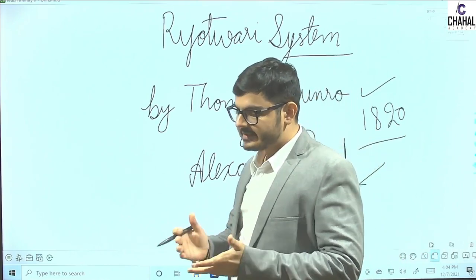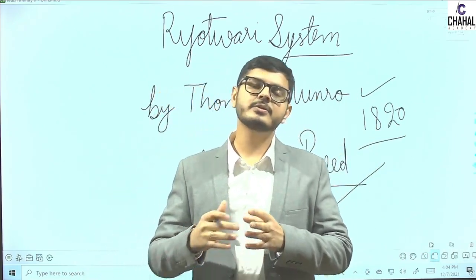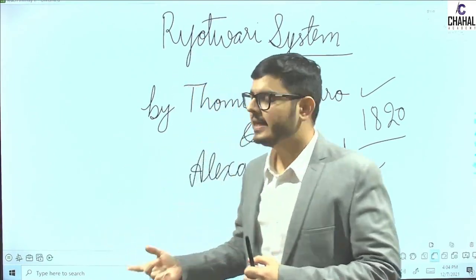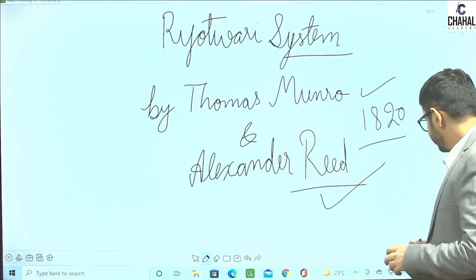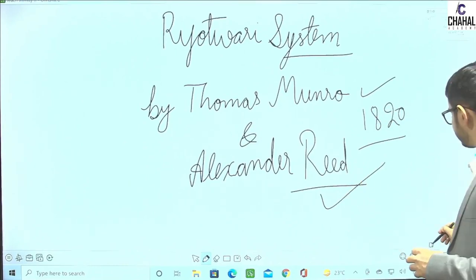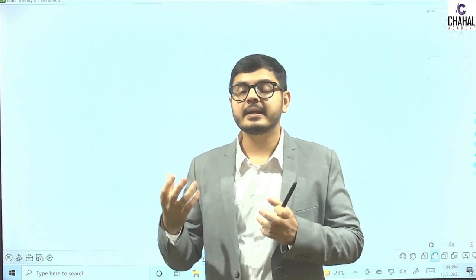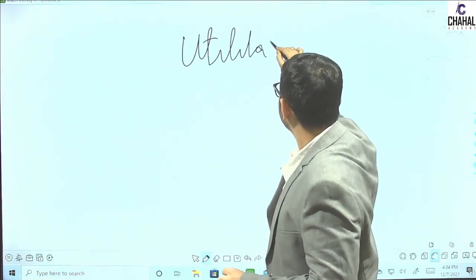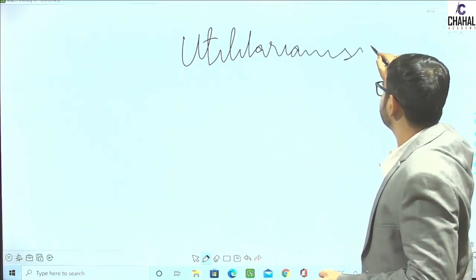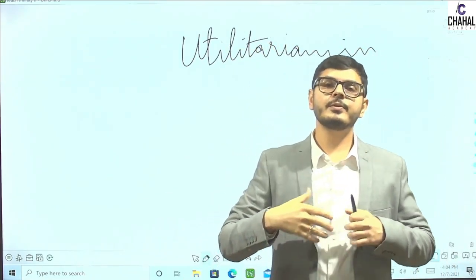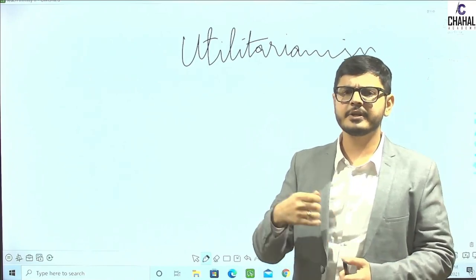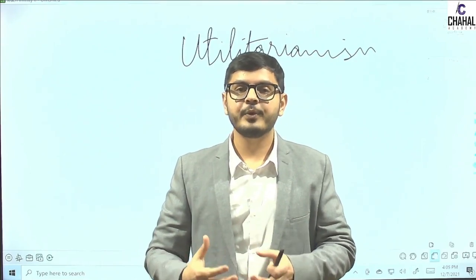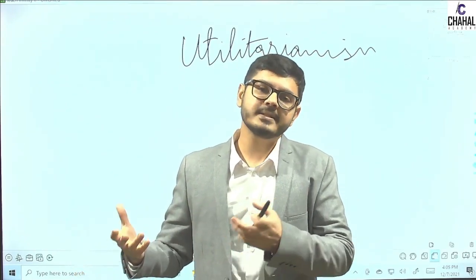First of all, please understand one thing. When the Ryotwari system was introduced in India, some British officials came from the ideology of utilitarianism, and Thomas Munro and Alexander Reid were among them. They believed that we should bring a system which is in the interest of the maximum number of people. Utilitarianism's theory says that there should be a system that gives maximum good to the maximum number of people.